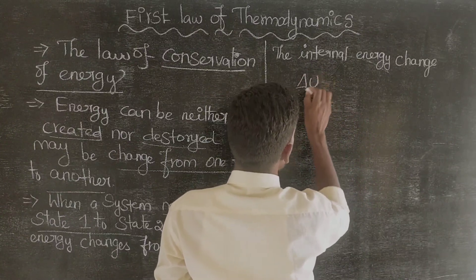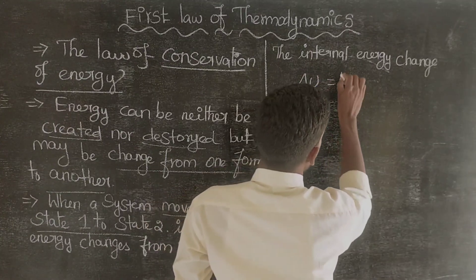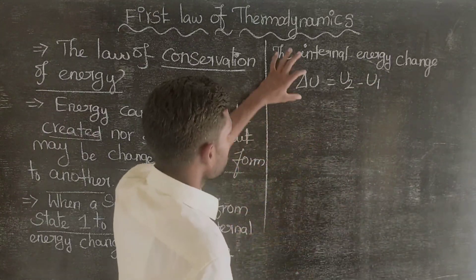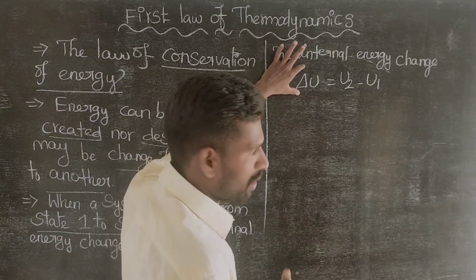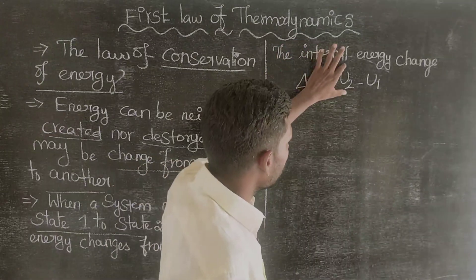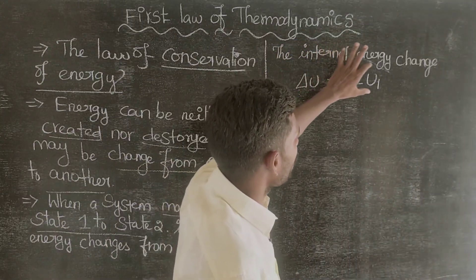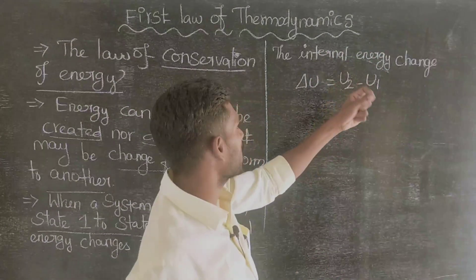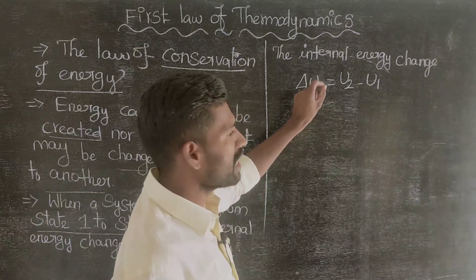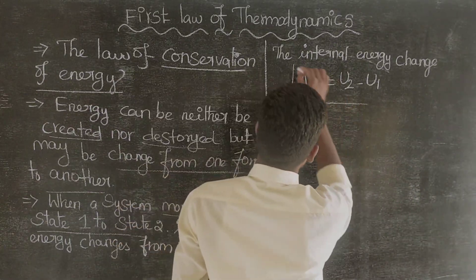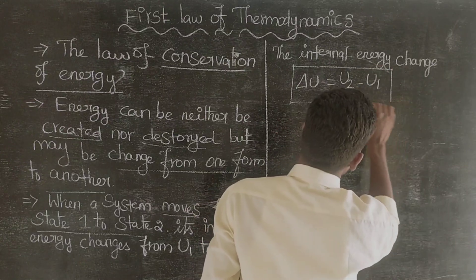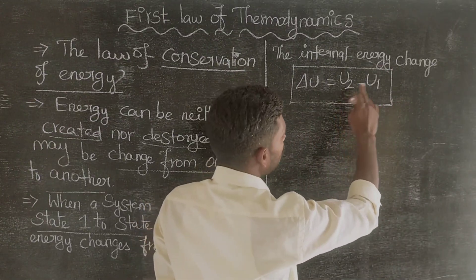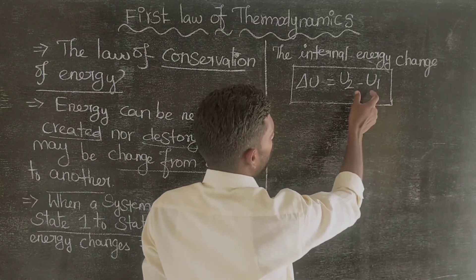The change in internal energy is written as delta U equal to U2 minus U1, where U2 is the final internal energy and U1 is the initial internal energy.